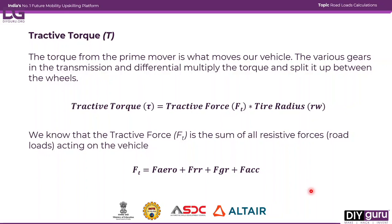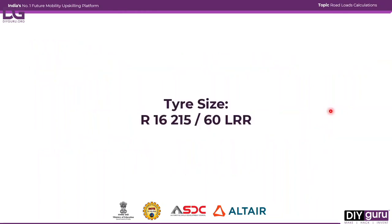The tractive force is the sum of all resistive forces acting on the vehicle, which includes aerodynamic drag, rolling resistance, gradient resistance, and acceleration forces. The tire radius is something new — we get it from the tire size. In the specification sheet of the Tata Nexon EV, we saw that the tire size is R16 215/60 LRR. We will now look at what each part of this designation means.